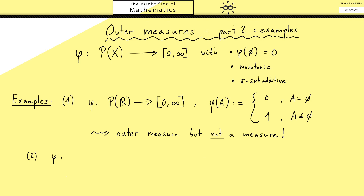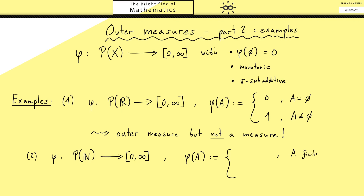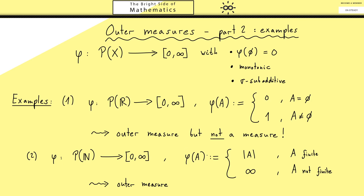The next example is also not a hard one. Now let's choose the natural numbers for the set X. The definition is: if A is a finite set, we count the elements — denoted with bars — which is the cardinality of the set. If A is not finite, we use the symbol infinity. This gives us again an outer measure, which is not hard to check since we just count elements. Indeed, this map is also sigma additive, so it is actually an ordinary measure — the famous counting measure.